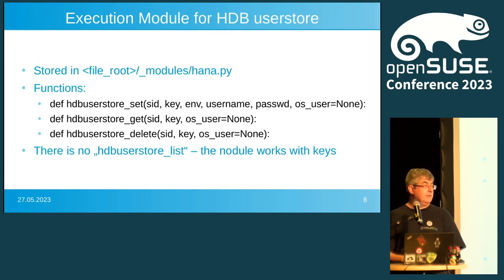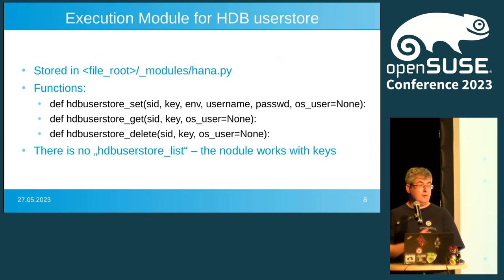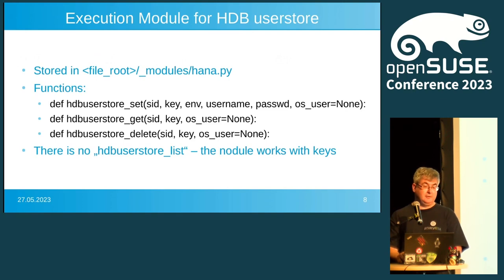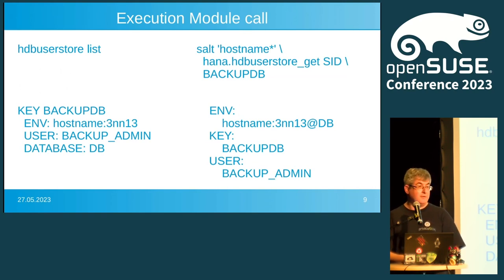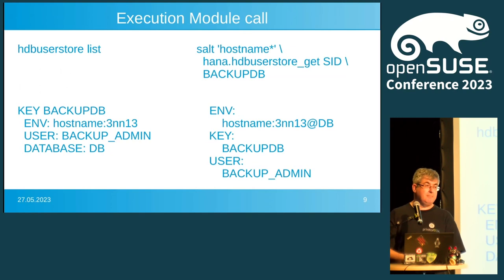We don't have an hdb_user_store_list as an execution module — we decided to have our module work with a single key as an instance to configure. Another option would have been to specify the complete HDB user store with all users, but that is not how we work — we look at single entries. The execution module call maps to the OS command, and we get back a list with the key, the environment where the user store entry should connect to, the username, the database (which is optional). What we don't get from the command is the password — so there's some guesswork whether we have the same password as what is stored in the user store.